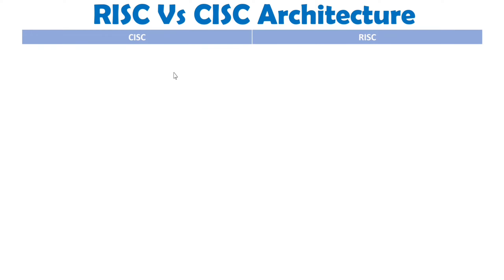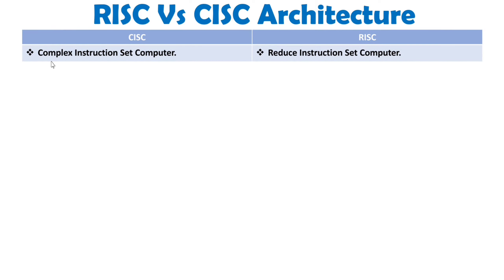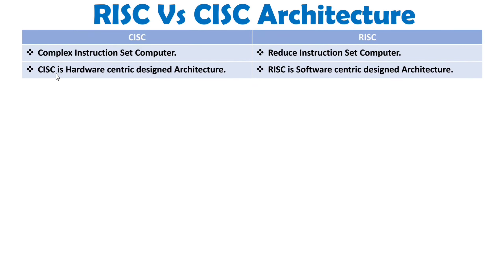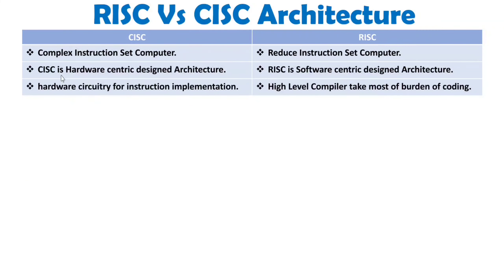When we talk about RISC and CISC, you should know their full forms first. Complex instruction set computer is CISC, and reduced instruction set computer is RISC. CISC architecture is a hardware-centric design architecture, where instructions are based on hardware configuration. While with RISC, you will observe a software-centric design architecture, where instructions are implemented using high-level compilers.